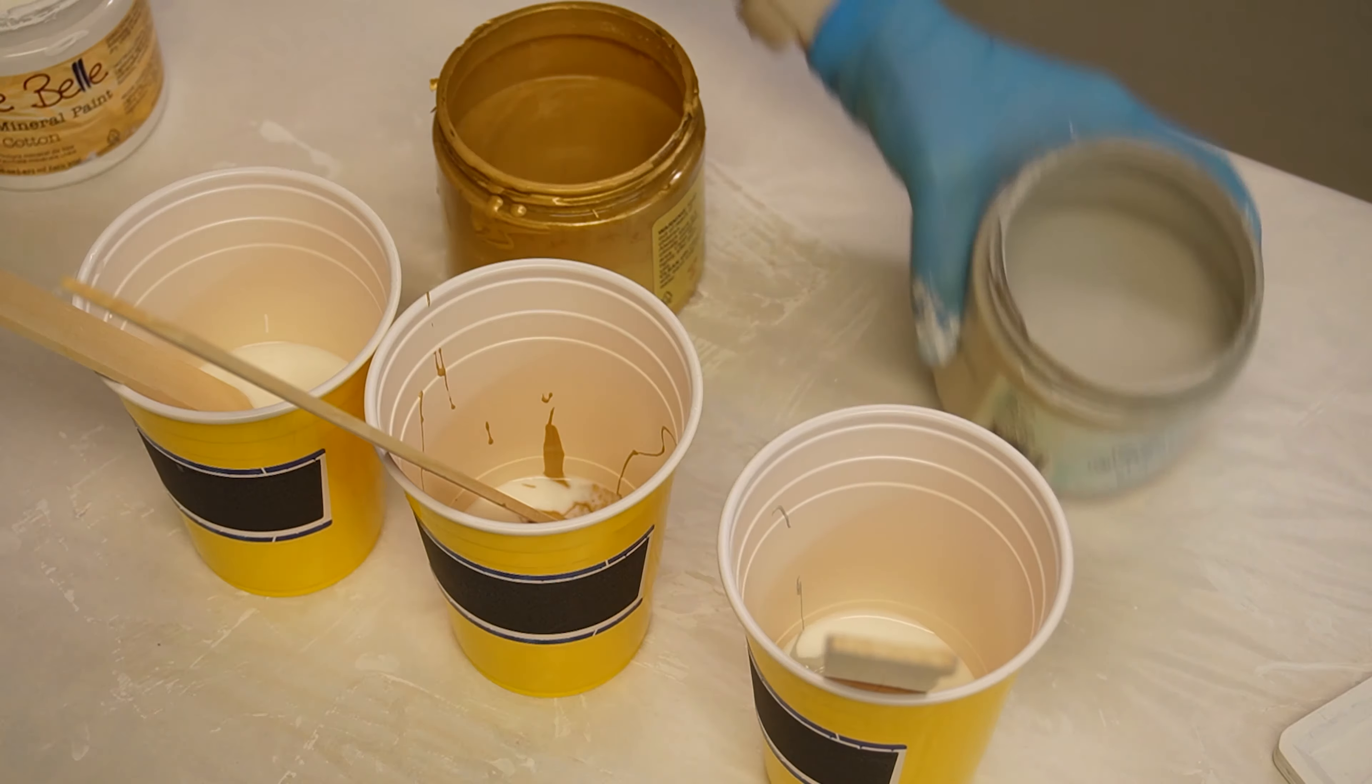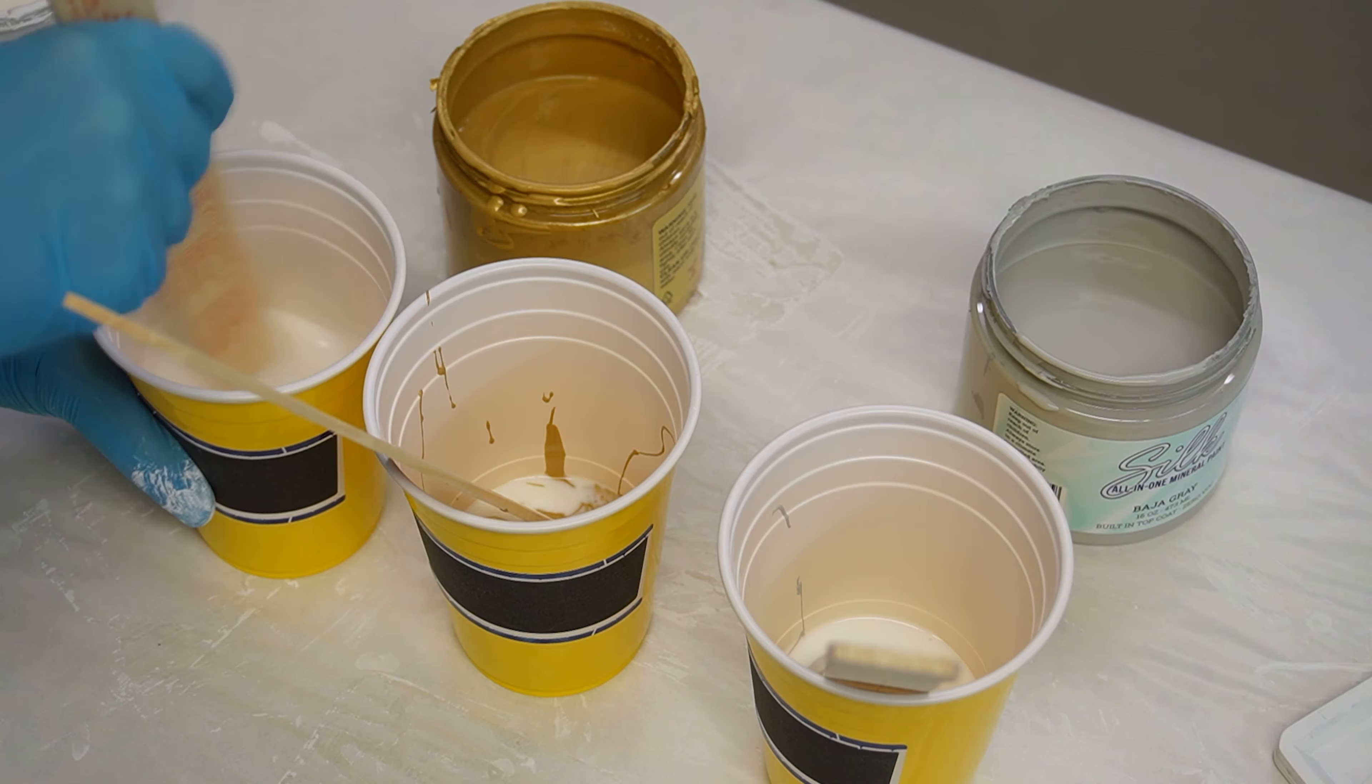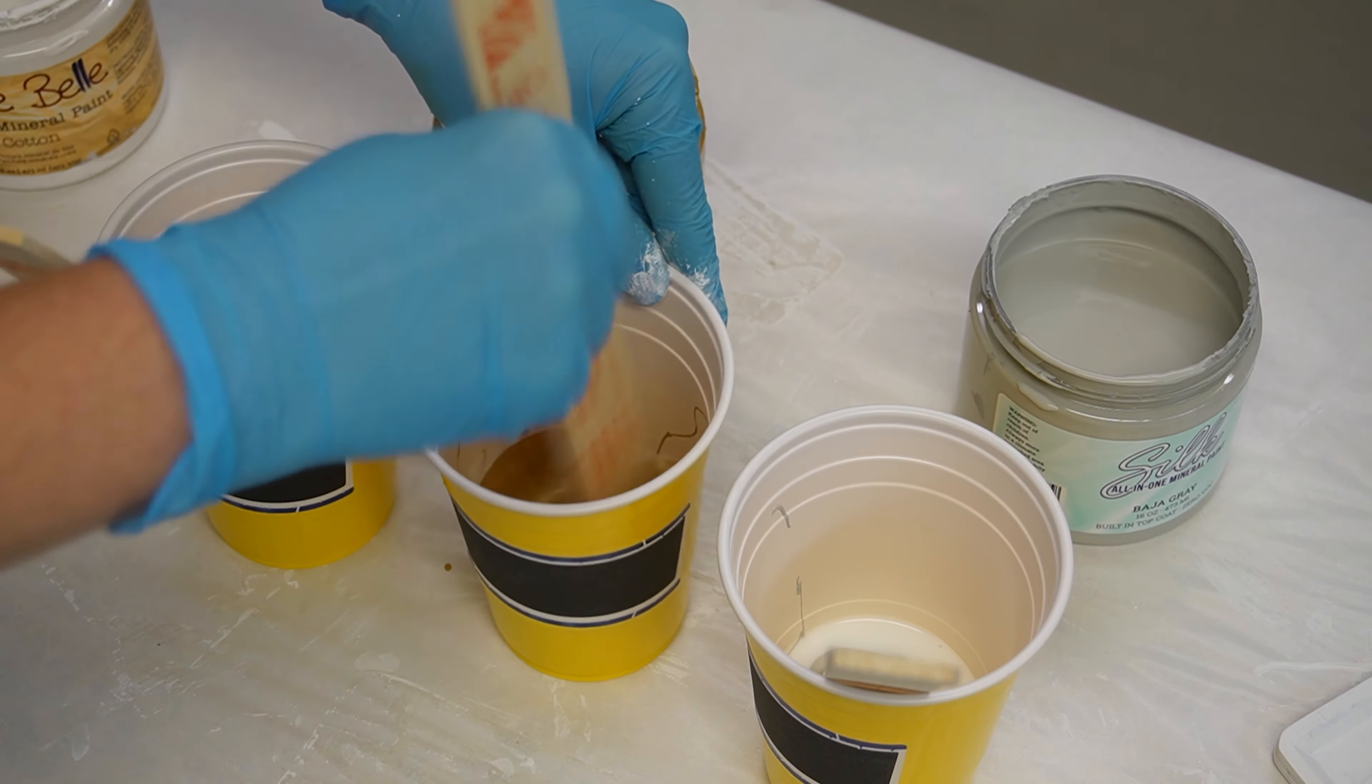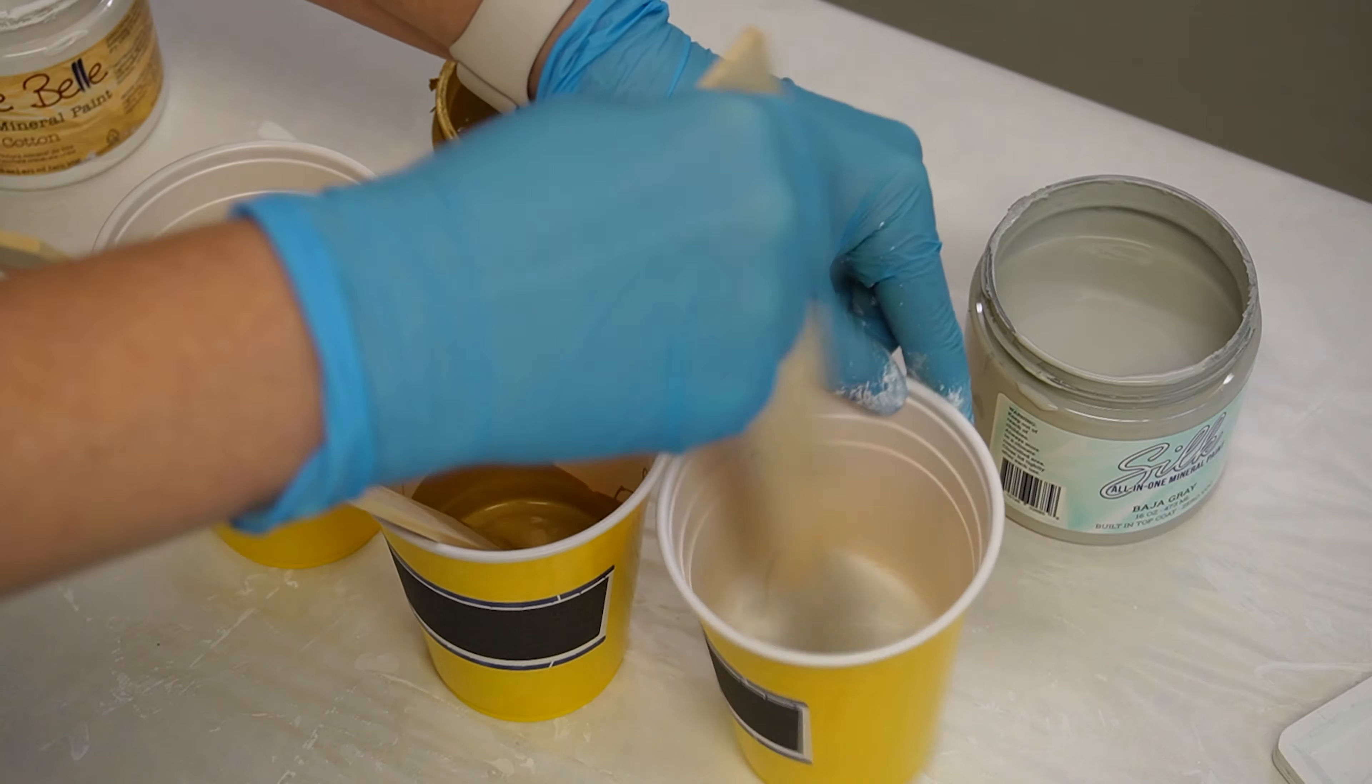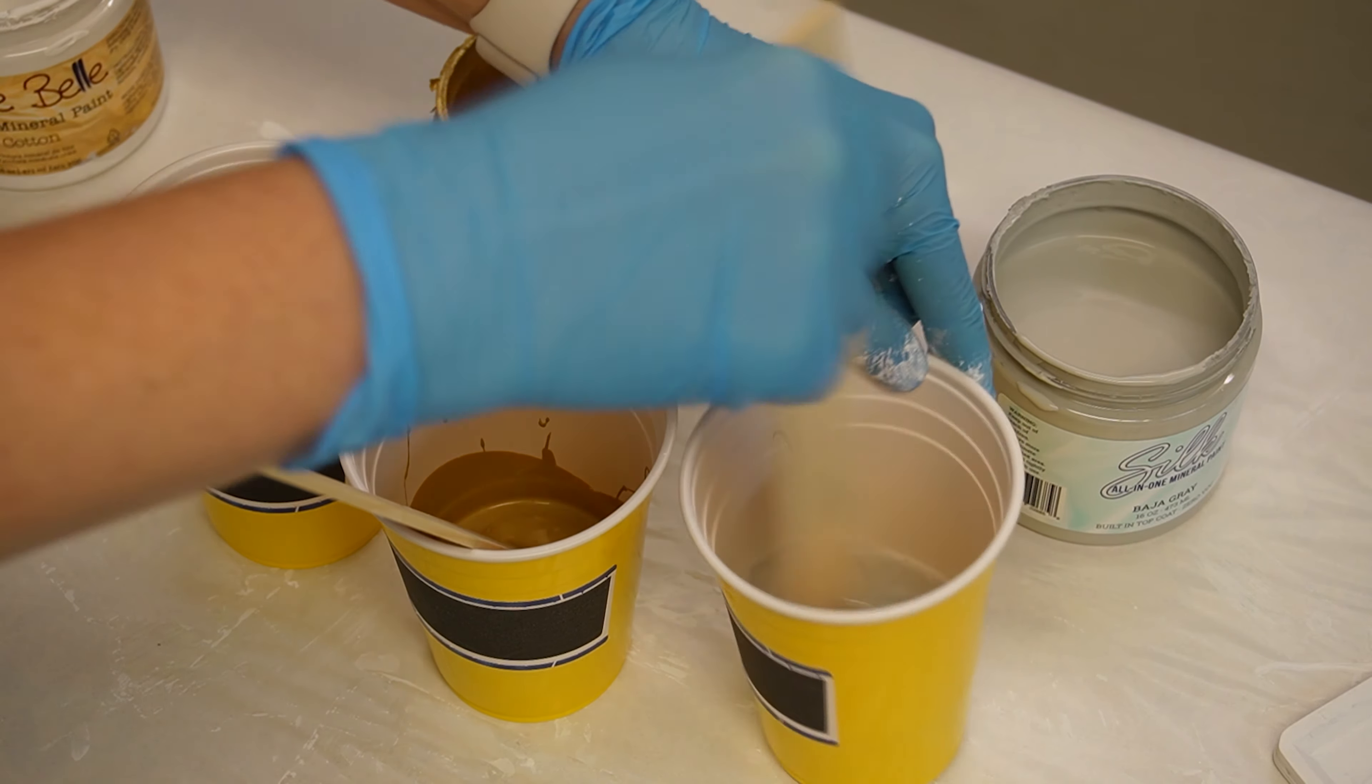The reason for this is because you want the consistency of your paint to still have body to it, but you want it to kind of glide over your project, like say warmed honey. So you still want it to have some body, but you want to make sure that it flows really nice and easily.